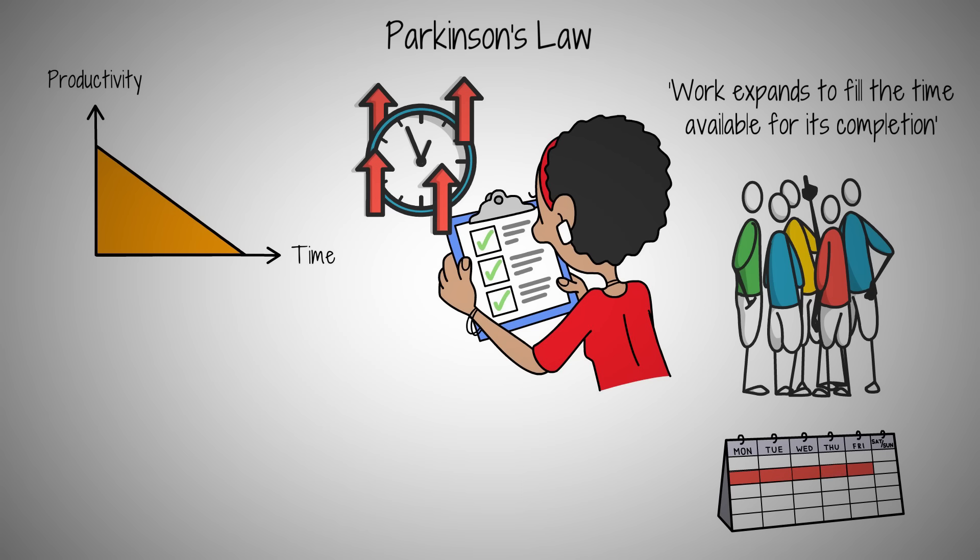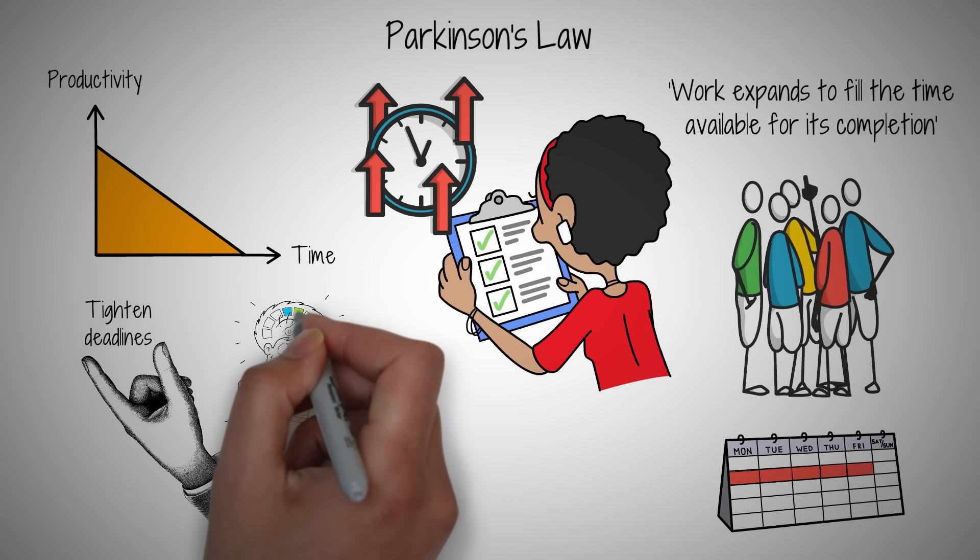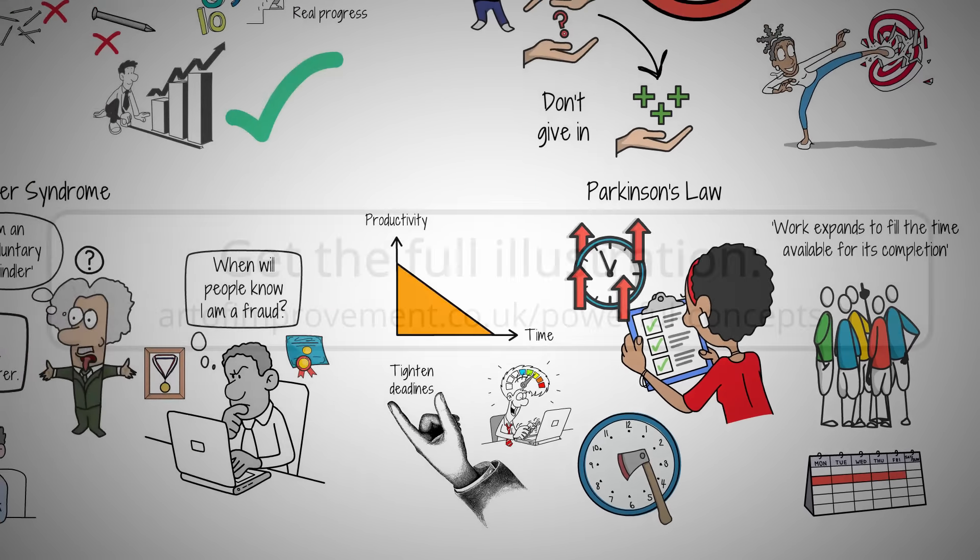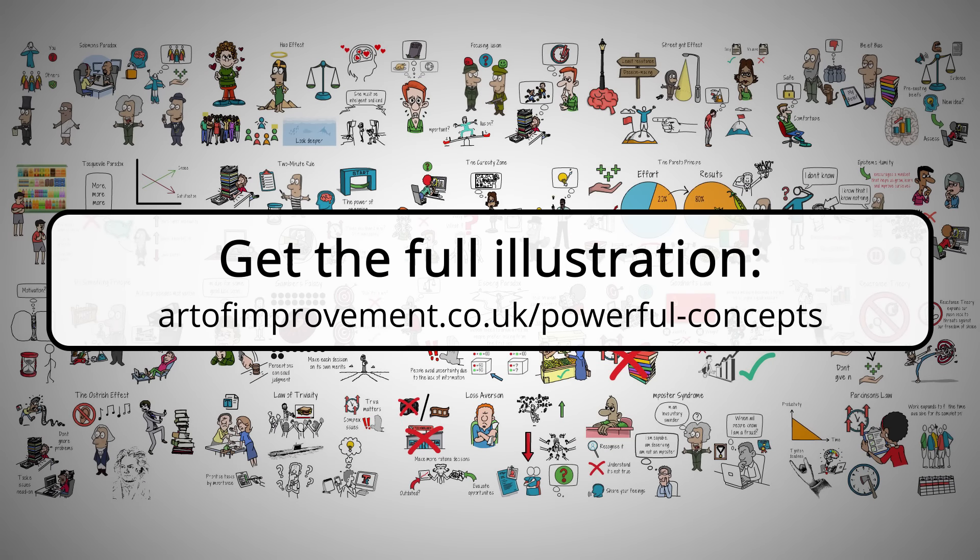But we can use Parkinson's Law to improve our efficiency. By setting tighter deadlines for ourselves, we can trick our brain into focusing and completing tasks more quickly without sacrificing quality. Next time you have a project, cut the usual time you'd allocate for it in half. You'll be surprised at how focused you can be. Embracing Parkinson's Law can transform the way you work, making procrastination a thing of the past.